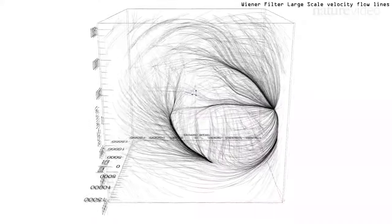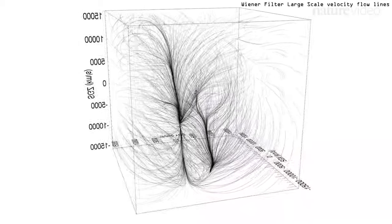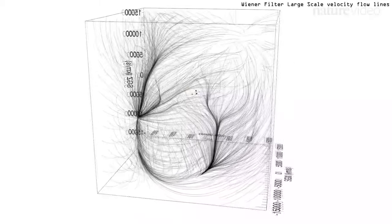But using this new technique, we see that the Virgo supercluster is part of a much larger structure that is one hundred times larger and more massive.